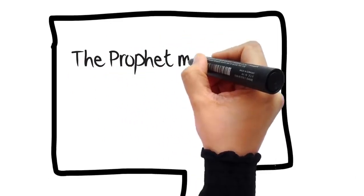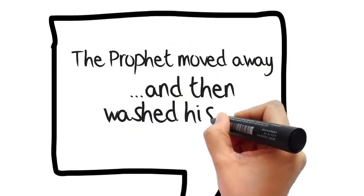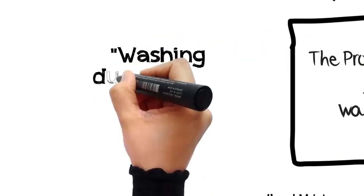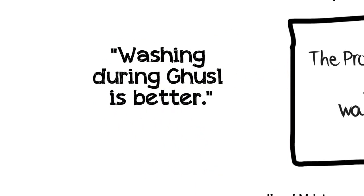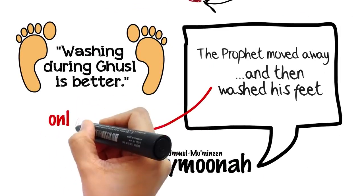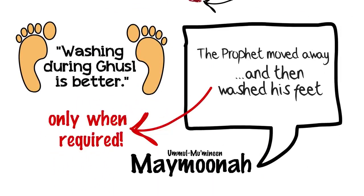Sheikh Ibn al-Uthaymeen explained that what is apparent from the various narrations is that the Prophet washed his feet after ghusl only when there was a need, like if the floor is made of dirt and if the feet are not washed they will remain soiled.